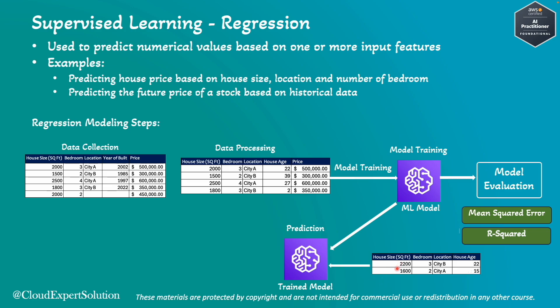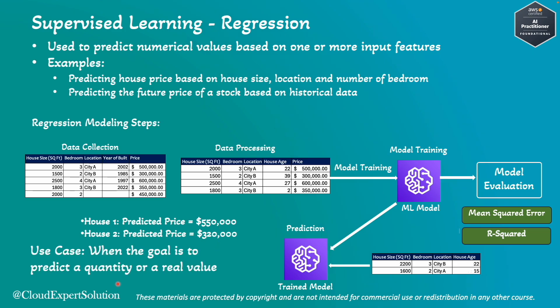For our example, we take two records to predict. With house size, number of bedrooms, city, and house age as inputs, the model predicts house one at around 5,500K and house two at around 320K. In the certification exam, you might encounter use cases asking you to identify the correct ML algorithm. If the use case is to predict a category like email type — spam or not spam — then it is classification. But if the goal is to predict a quantity or a real value, then it is regression.